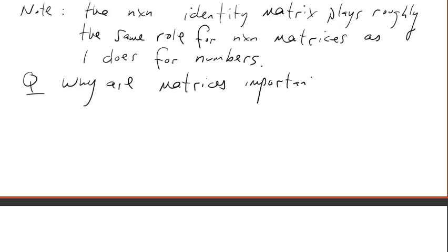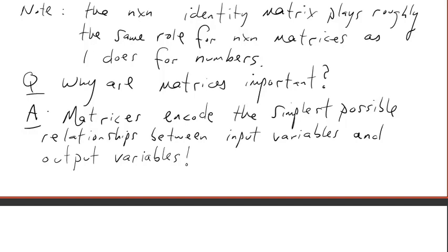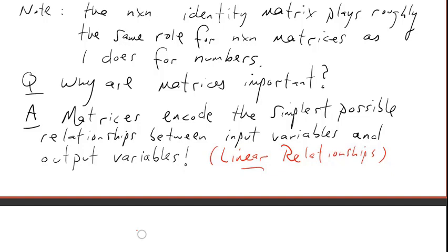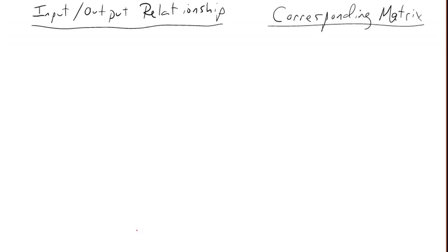Why are matrices important? It's a big question, but here's my best answer. Matrices encode the simplest possible relationships between input variables and output variables. In particular, these are called linear relationships because variables only appear to the first order: no squares, no cubes, and so on. Let's look at a few examples to get an idea of what I mean.